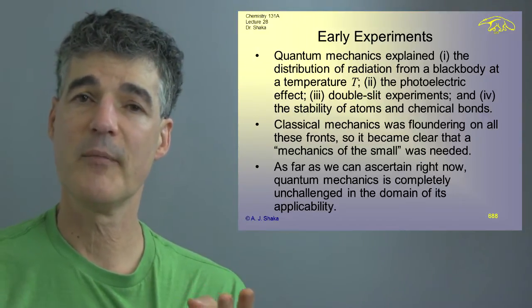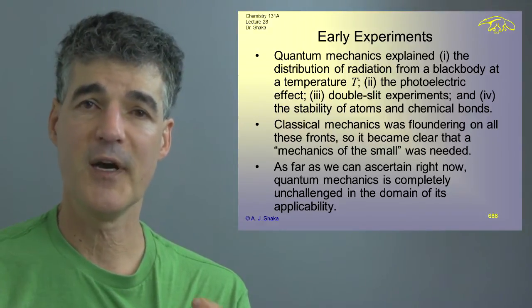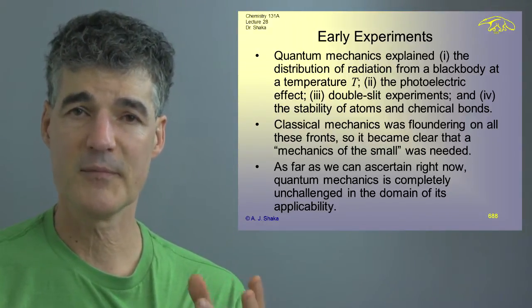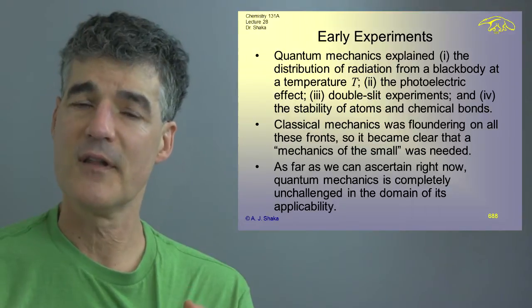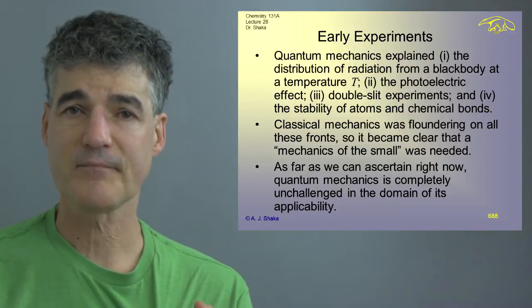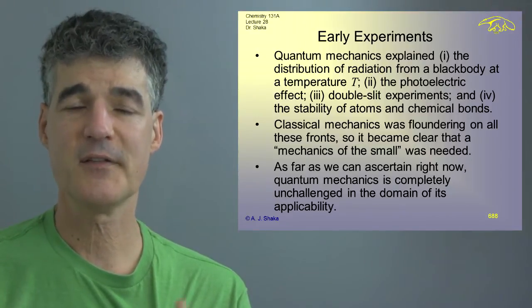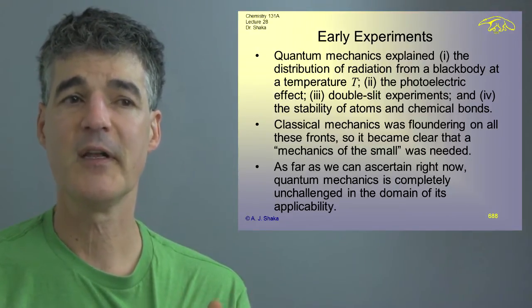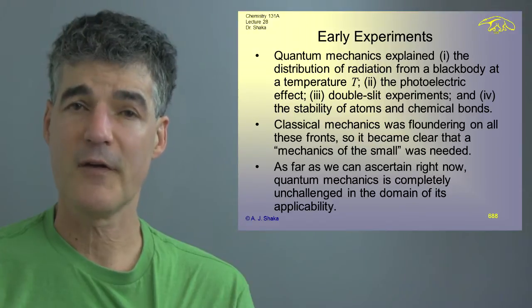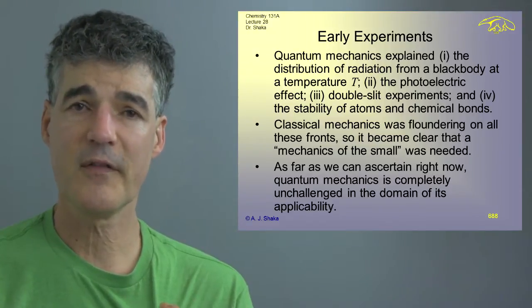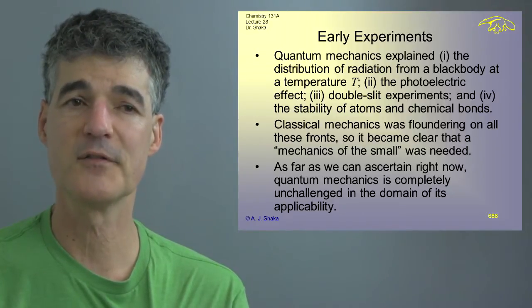The second key experiment was the photoelectric effect which again disagreed and seemed to indicate that light might have a particle nature that perhaps Newton's idea was correct and the third was the double slit experiment which seemed to indicate that an electron could go through both slits but that's a more recent experiment and the earlier experiment was just that the electrons could diffract from a nickel crystal and so the electrons seem to have a wave property because waves diffract and particles do not.